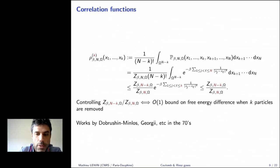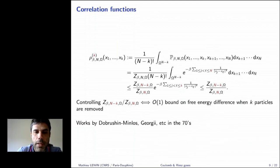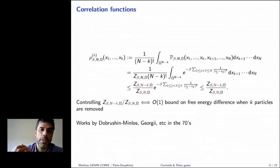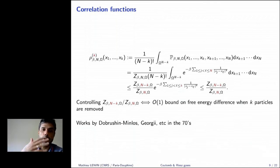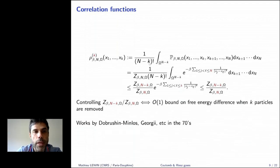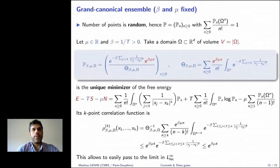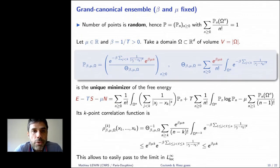The advantage of working in the grand canonical ensemble is that this bound becomes completely obvious. One can then show the equivalence of ensembles to transfer the result to the canonical case. For grand canonical, one needs only a weaker result in the canonical case, and the key point is that everything is much easier in the grand canonical setting.